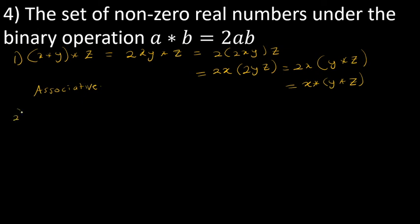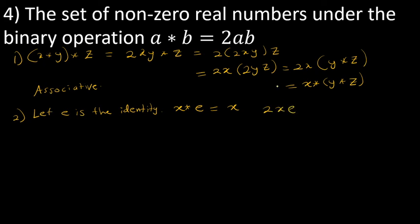Let's find the identity. Let E be the identity, so x star E should equal x. By the definition of star, x star E equals 2xE equals x. Since x is not equal to zero (as these are non-zero real numbers), I can cancel x from both sides, giving 2E equals 1, so E equals one-half. In this group the identity is one-half.